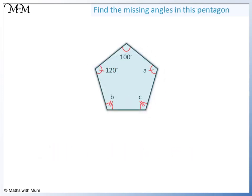In this example, there are three missing angles, A, B and C. The single lines mean that these two angles are the same size. And the double lines mean that these two angles are the same size. We will start with A. This angle is the same as this angle. So A must also be 120 degrees.